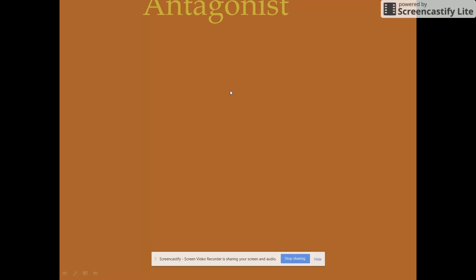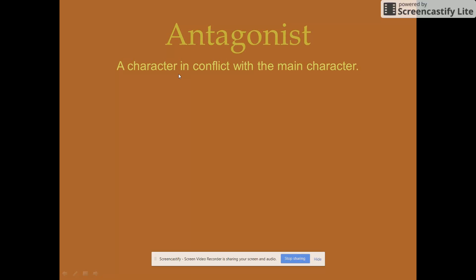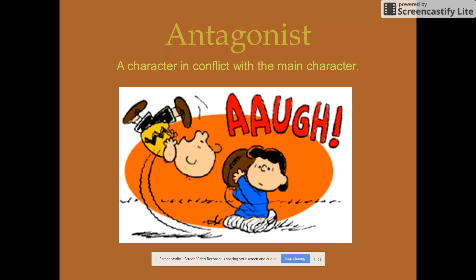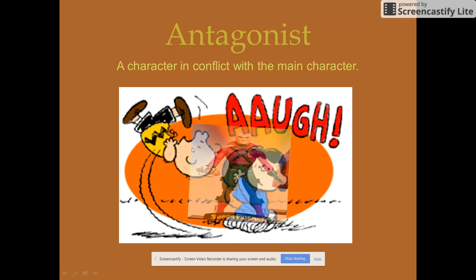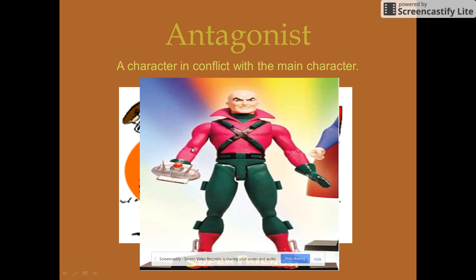On the flip side, we have the antagonist — the character or force that is in conflict with the main character; the person or situation creating a negative situation for them. Look at the prefix "ant" — you're against something. Think about Lucy in Peanuts: every time Charlie Brown goes to kick the football, she yanks it away at the last minute, causing him conflict. Or Lex Luthor, who is always trying to use kryptonite to take away Superman's powers.